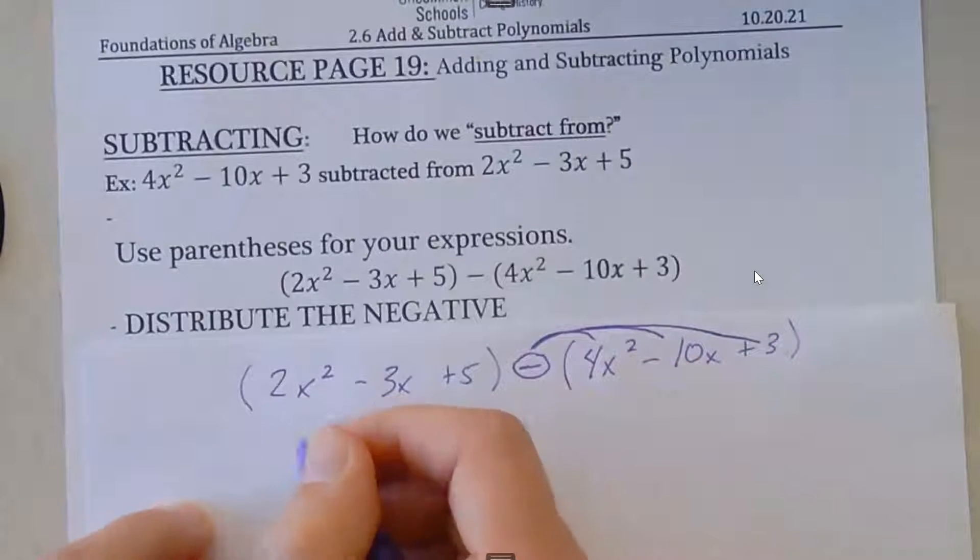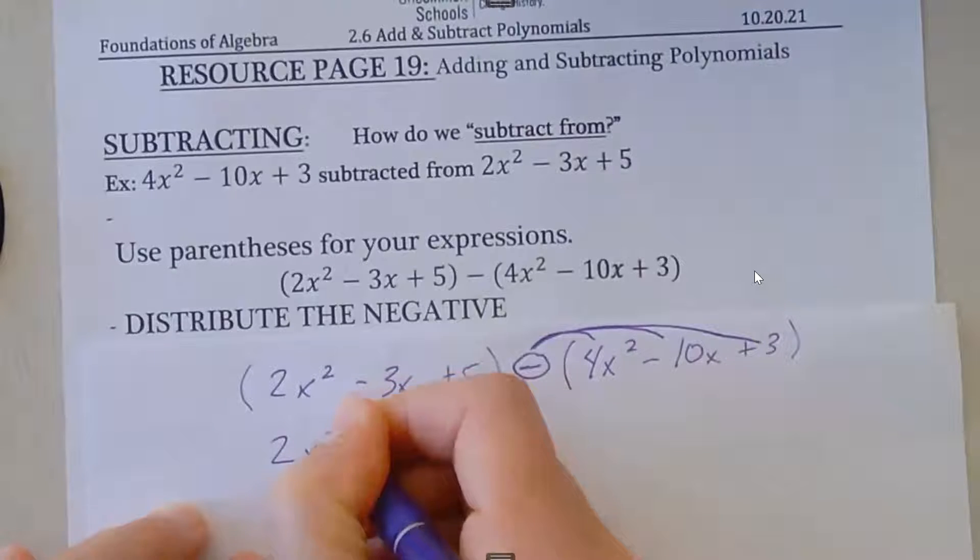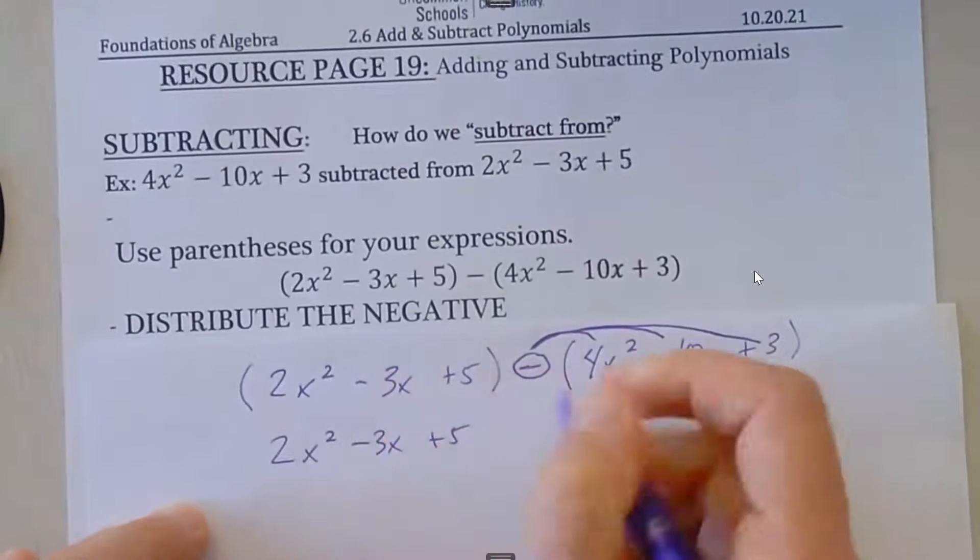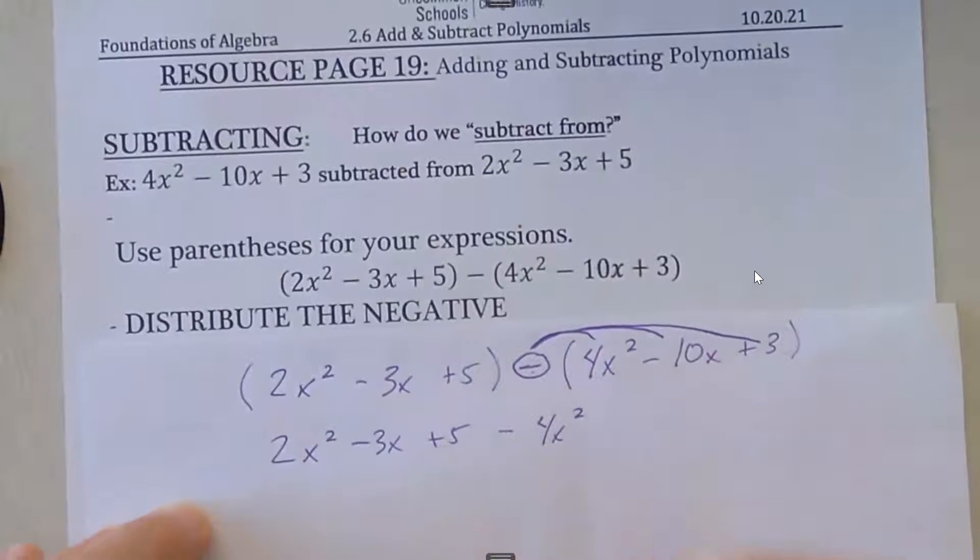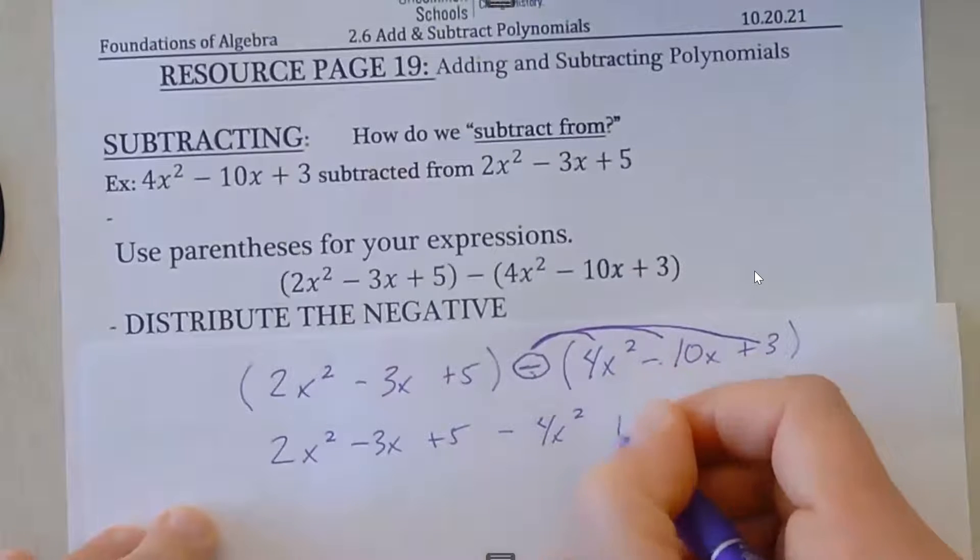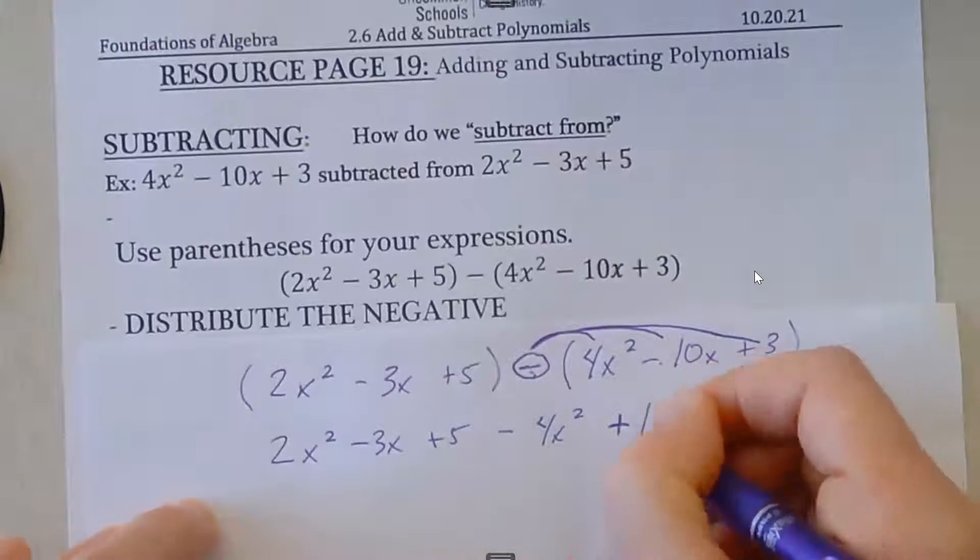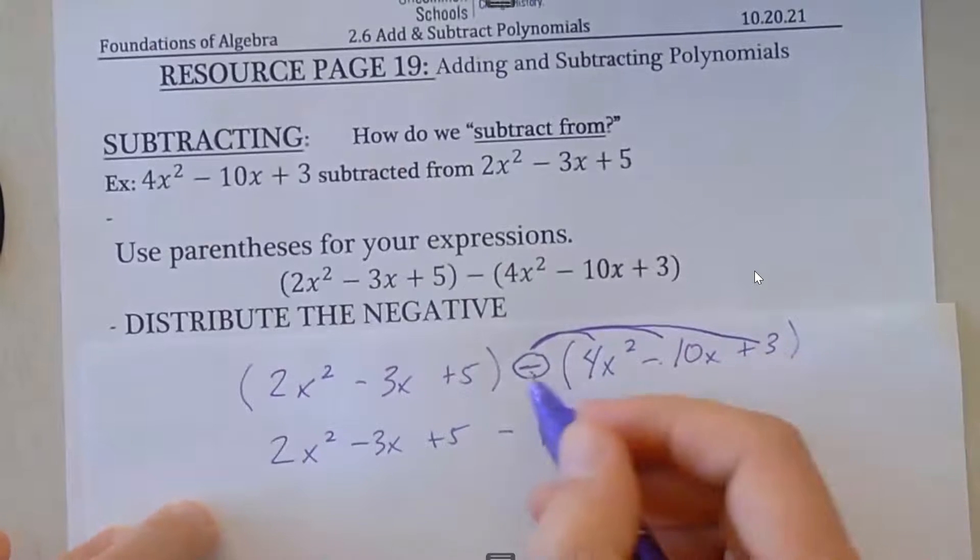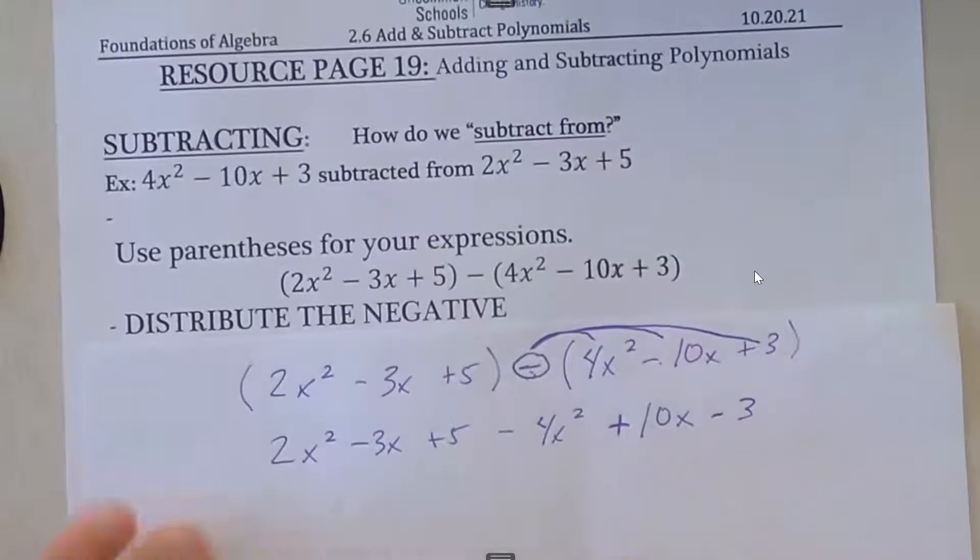So I can take the parentheses off now that I'm distributing. So I have 2x² - 3x + 5. This is minus a positive, minus 4x². Now this one, minus a negative—minus a negative is the same as adding, so that's where we see a sign change. Plus 10x. Then minus a positive should be minus 3.